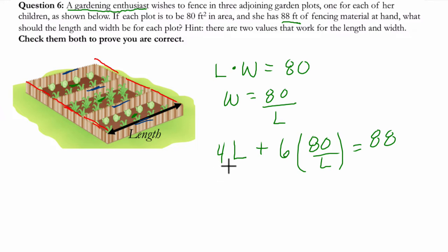Now I'm not too worried about L equaling 0 here, because we know that, or we can assume, I suppose, that we want to enclose a garden of some positive area. So I'm not too worried about dividing by L here. So I'm going to multiply everything by L. That will essentially cancel out the denominator L, and I get 4L squared, plus 6 times 80 is 480. Those L's cancel out, and then equals 88L.